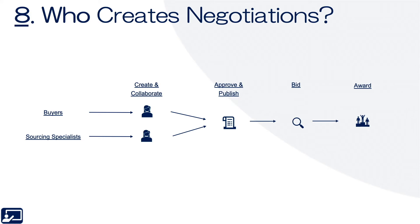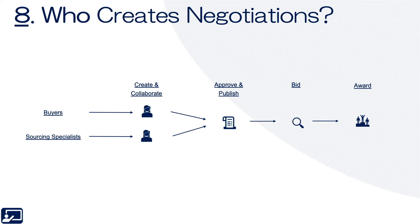Eighth topic: who creates negotiations? That's largely buyers and sourcing specialists, sometimes also called category managers. Often a buyer creates the actual negotiation, but the category manager is the ultimate approver before publishing, because they own the categories and may link negotiations to different programs — for example, IT spend — ensuring negotiations conform accordingly.